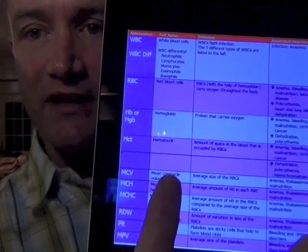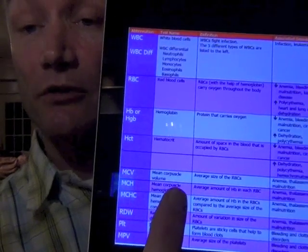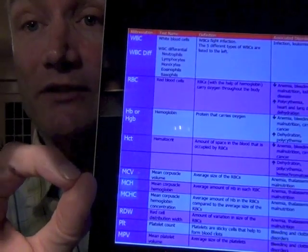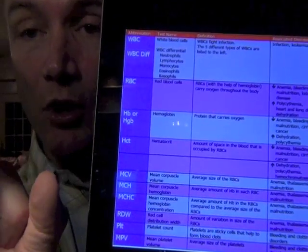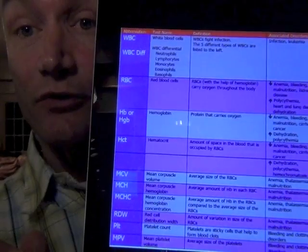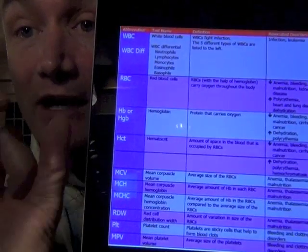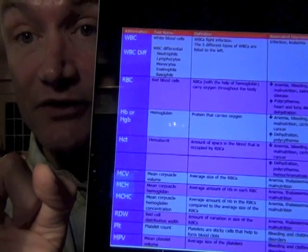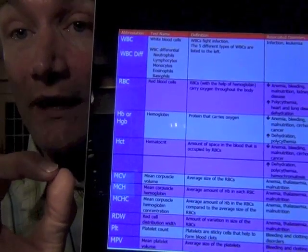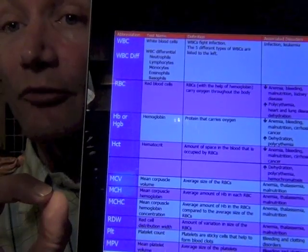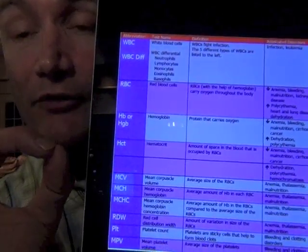The MCV is the mean corpuscular volume. Are your red blood cells large enough or are they small? Sometimes deficiencies in certain nutrients. If you're low in iron, your red blood cells are going to be very small. If you're low in B12 and folic acid, you're going to have very fat, large red blood cells.